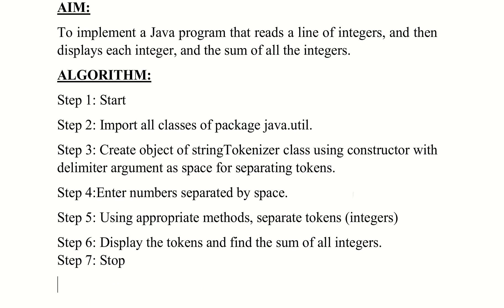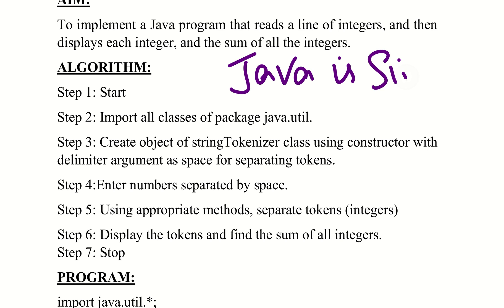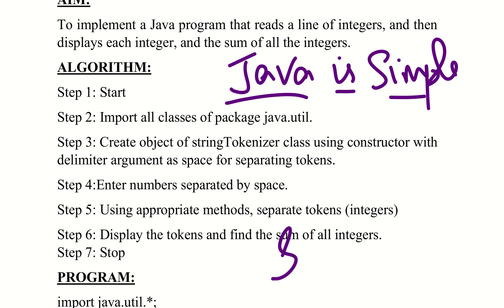So what does StringTokenizer mean? It allows you to break a string into different tokens. For example, 'Java is simple' — that is a string. We will divide the string into three tokens. The class we use for this is known as StringTokenizer.